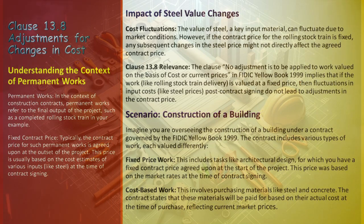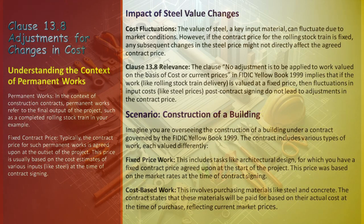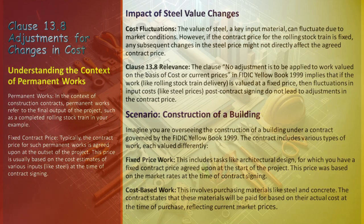Typically, the price for permanent works is set at the project's inception, based on the initial cost estimates of necessary inputs like steel at the time of contract signing. Dealing with fluctuating input costs such as steel is a common challenge — the value of materials like steel can vary significantly due to market conditions. However, if the contract price for permanent works like a rolling stock train is fixed, changes in the steel price post-contract signing typically don't impact the agreed contract price.